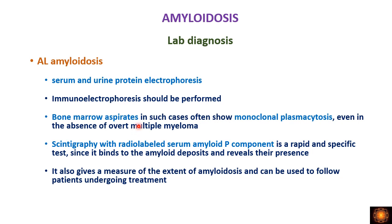Bone marrow aspiration is useful in AL amyloidosis — which is seen in plasma cell neoplasms — to identify plasmacytosis. Scintigraphy with radio-labeled serum amyloid P component is a rapid and specific test that immediately binds to amyloid deposits and also provides a measure of the extent of amyloidosis, which is helpful for the patient's prognosis.